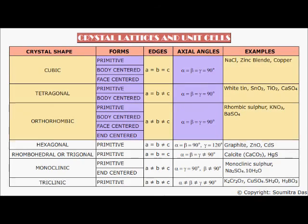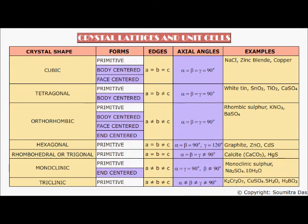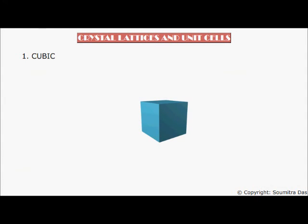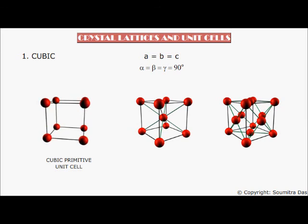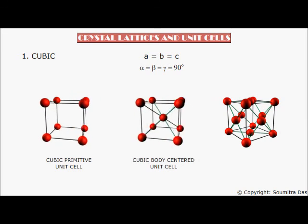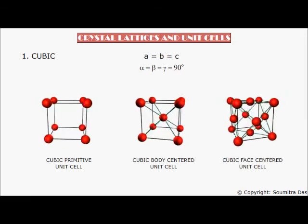There are seven shapes of unit cells. The shape of a unit cell depends on the edge lengths and the axial angles. All shapes have primitive unit cells, and some shapes come with one or more centered unit cells. Number one: Cubic. Here, a = b = c and alpha = beta = gamma = 90 degrees. Three forms of cubic unit cells exist: cubic primitive, cubic body-centered, and cubic face-centered unit cells.